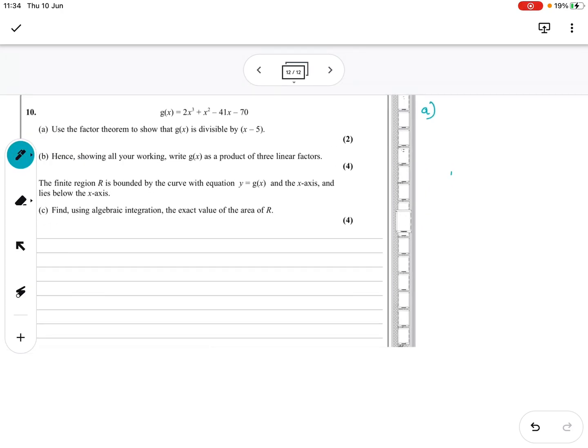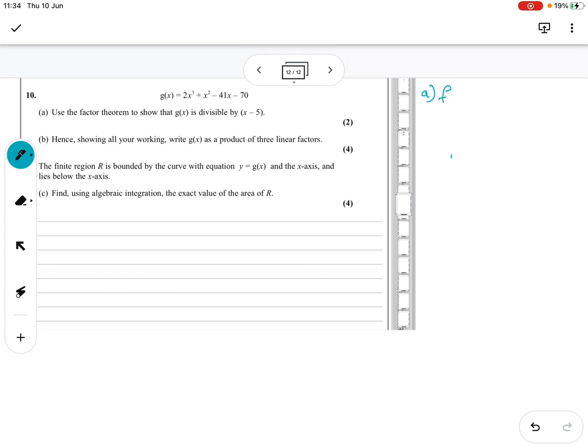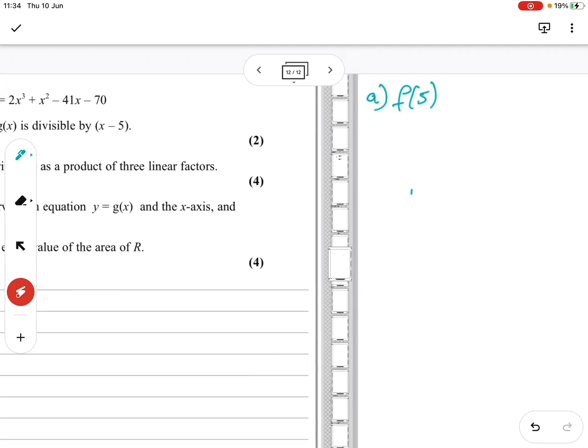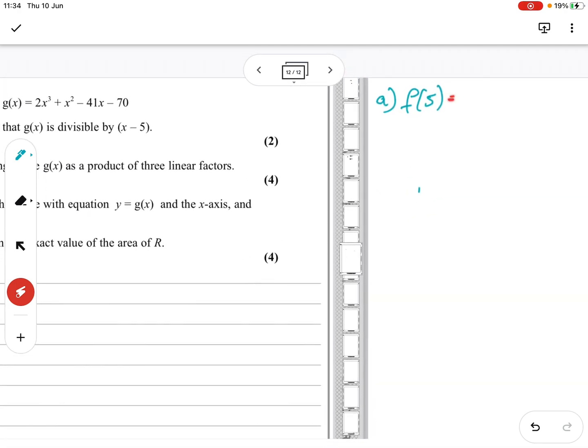So we start off with f(5), because if we put 5 in here, this becomes 0, which means the whole thing will be 0 if this is a factor. If there's a remainder, it won't. So you have to be very clear on what you're doing.